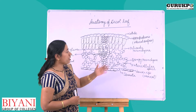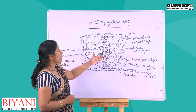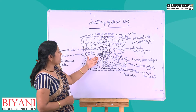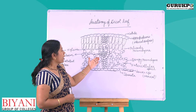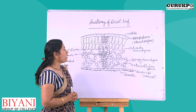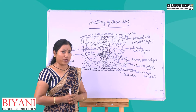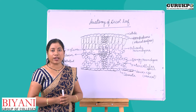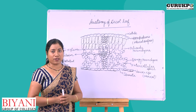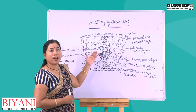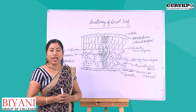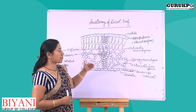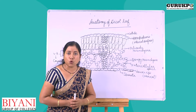There are some vascular bundles present in the veins and midribs. These vascular bundles are surrounded by a bundle sheath. Vascular bundles are made up of xylem and phloem. They are conjoint, collateral, and closed type of vascular bundles, meaning xylem and phloem are present in the same radius. Xylem is present towards the upper surface and phloem is present towards the lower surface.